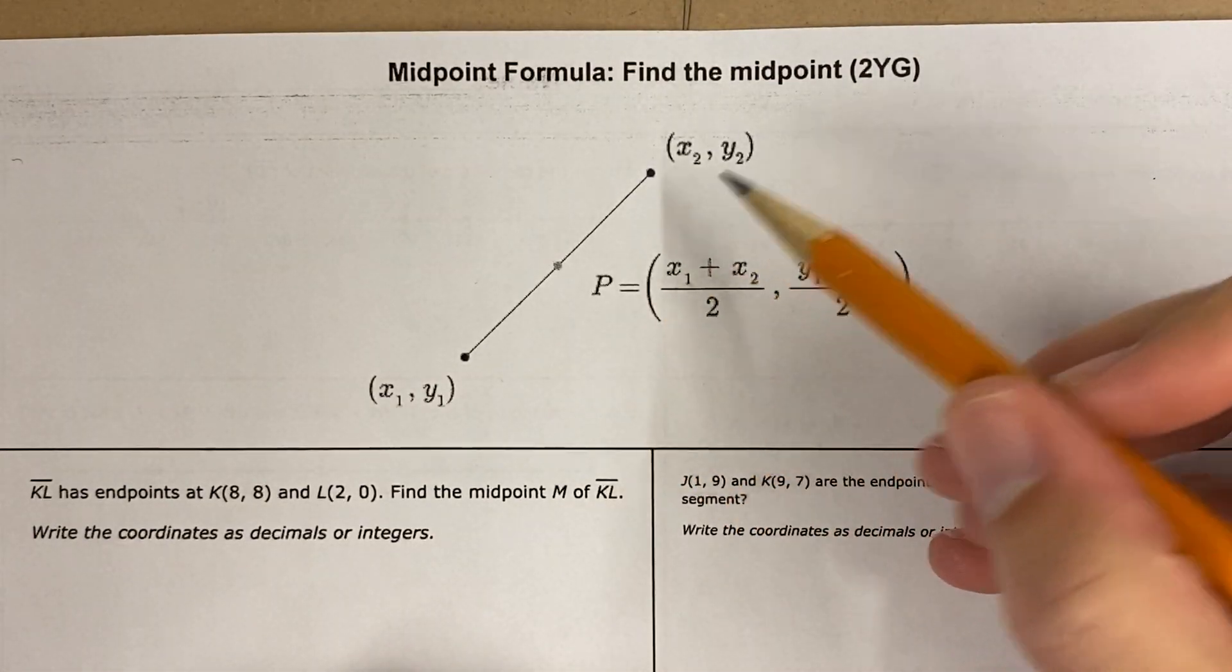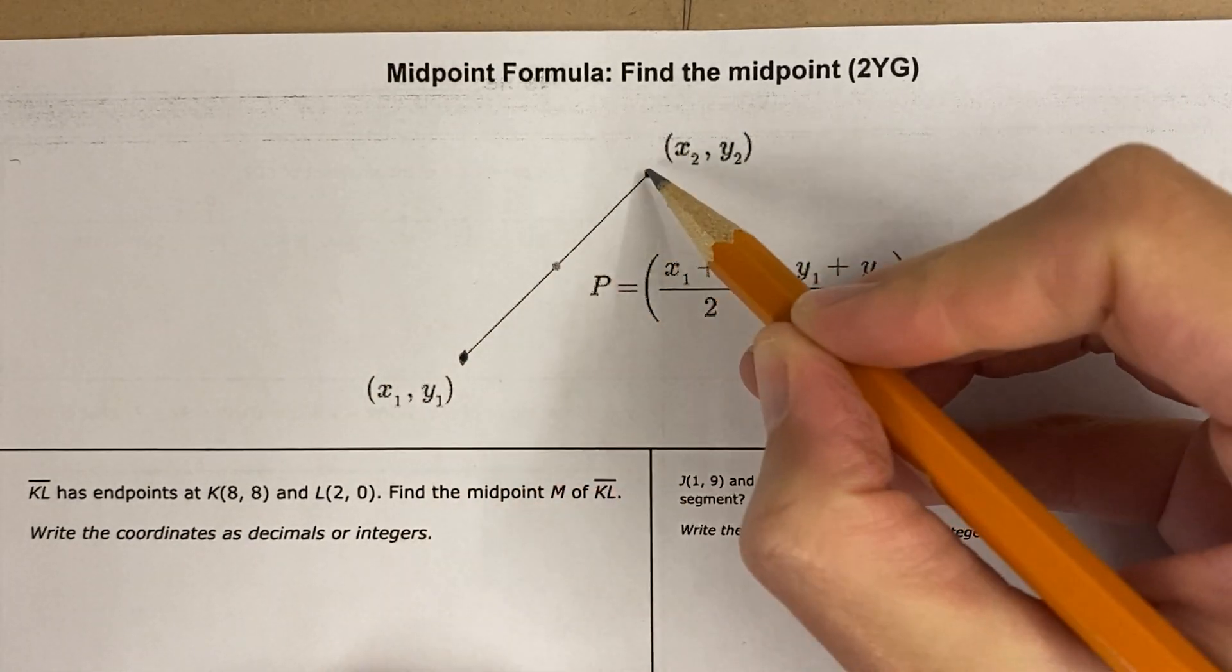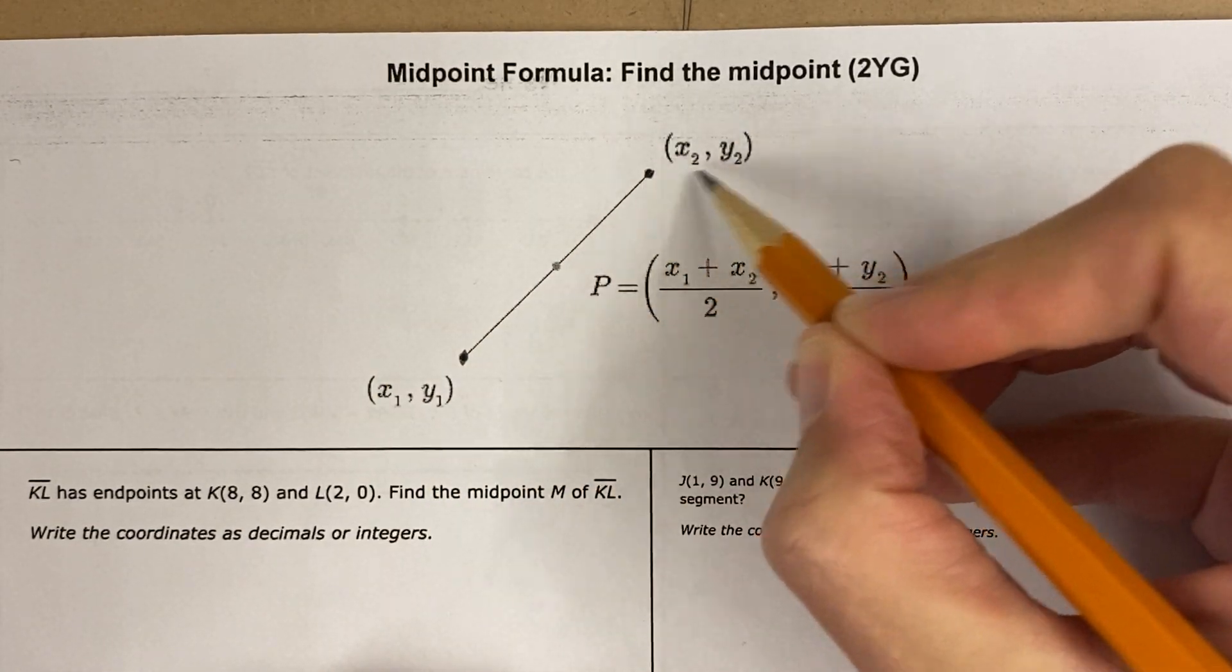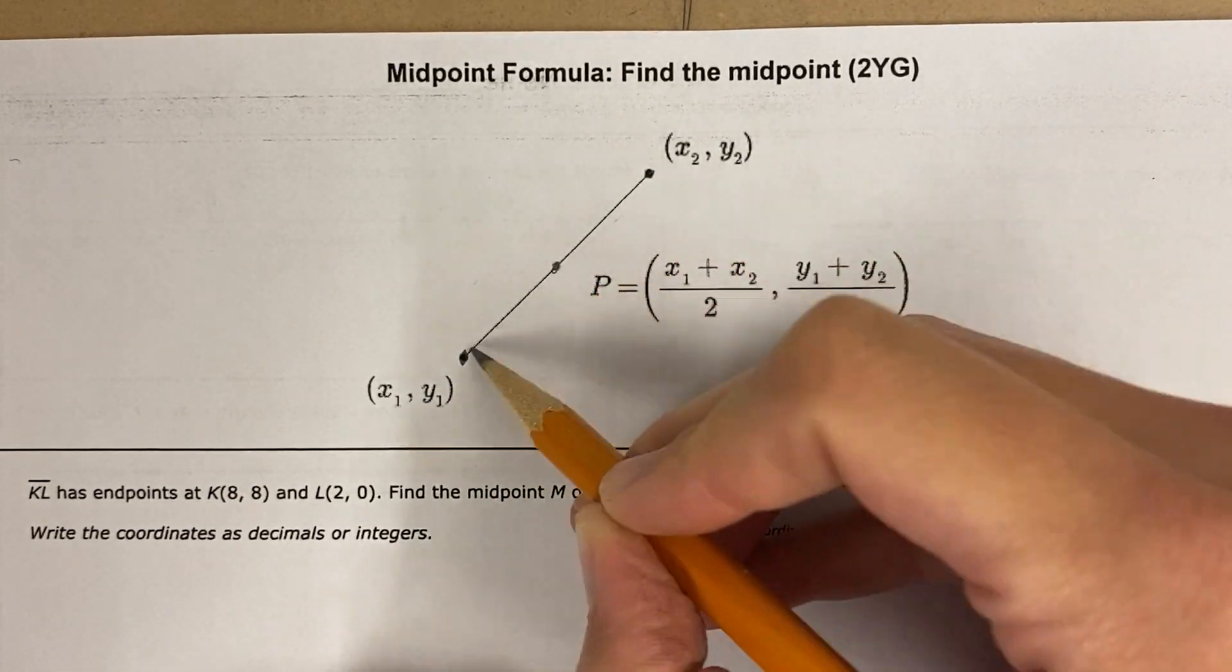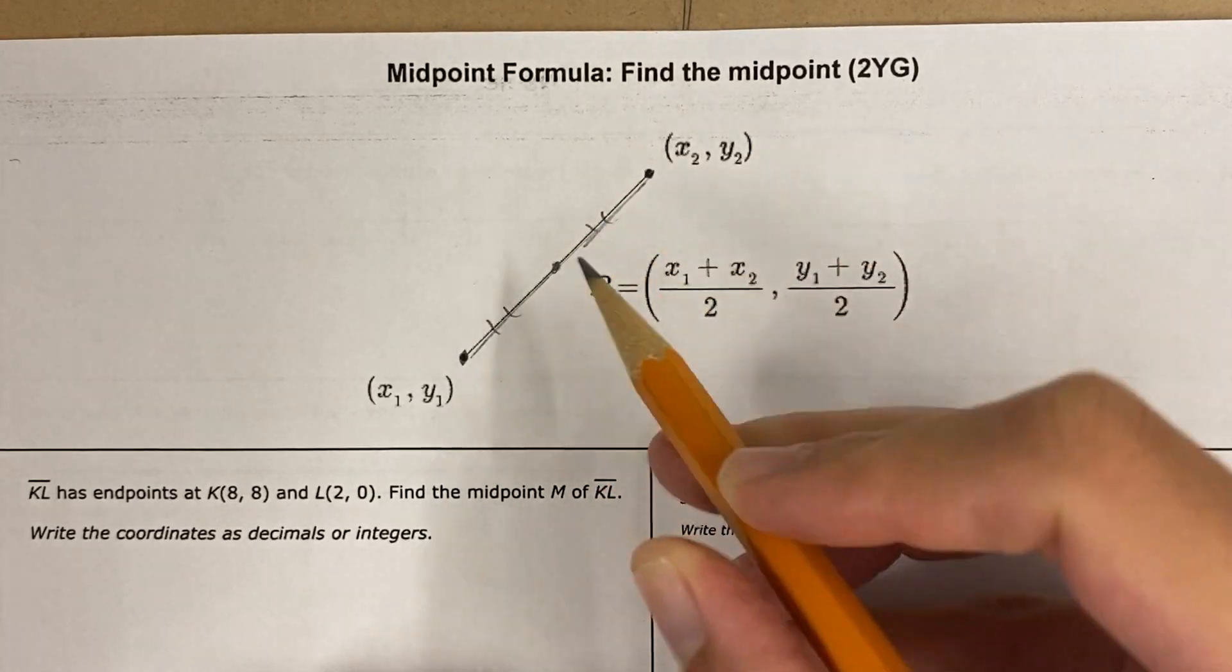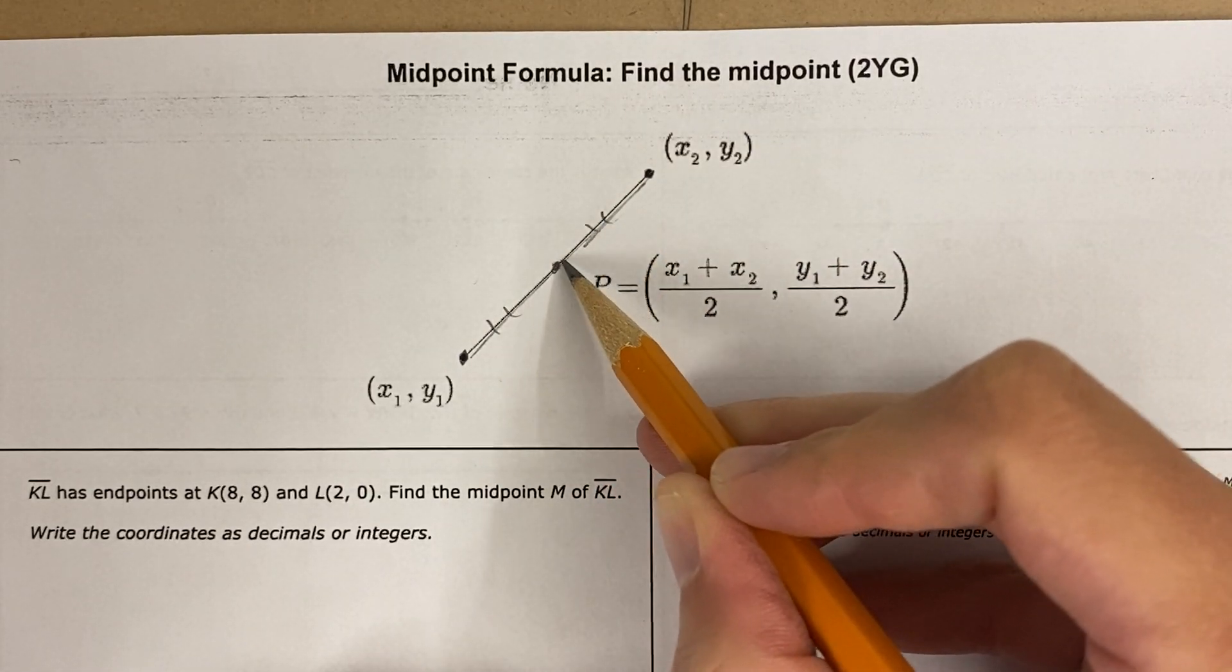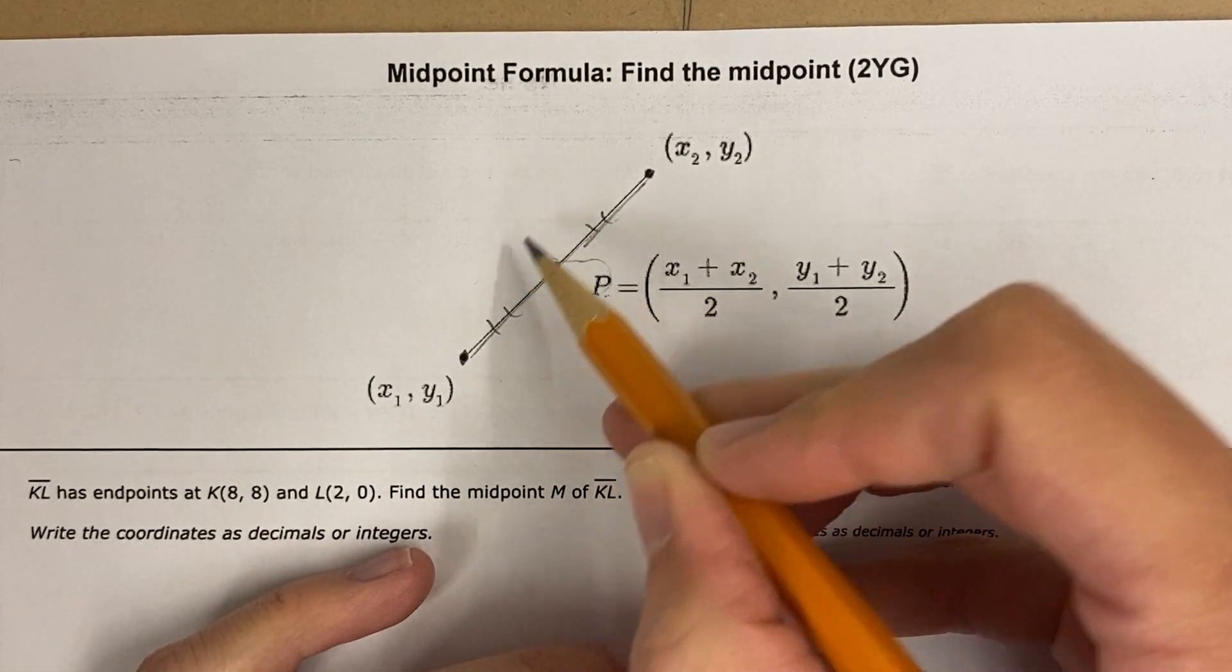So here's the midpoint formula. What this formula says is that if this point has an x and a y value, and this point has an x and a y value, that's how we talk about points. This point, the point that's in the middle that splits this into two equal parts, let's call it p, sometimes we call it m for midpoint.